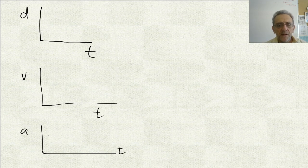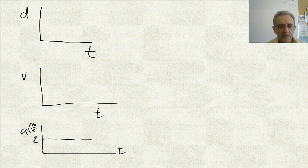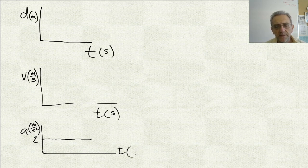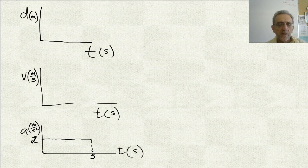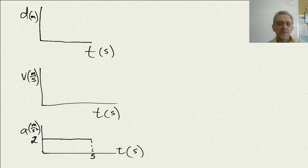The acceleration may have looked something like this — meters per second squared — and the velocity was in meters per second, and distance in meters, with time in seconds. At five seconds, the acceleration being a two. How would I get the v(t) graph from the a(t) graph? How do we go from here to here?